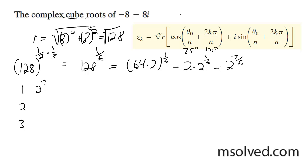We're going to have 2 raised to the 7/6, cosine of 75 degrees plus i sine of 75 degrees.